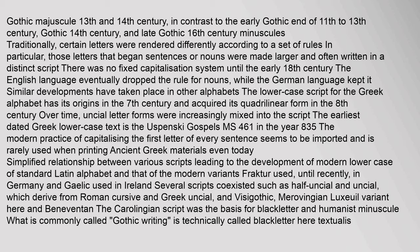There was no fixed capitalization system until the early 18th century. The English language eventually dropped the rule for nouns while the German language kept it. The lower case script for the Greek alphabet has its origins in the 7th century and acquired its quadrilinear form in the 8th century. The earliest dated Greek lower case text is the Uspensky Gospels (MS 461) in the year 835. Several scripts coexisted such as half-uncial and uncial, which derive from Roman cursive and Greek uncial, and Visigothic, Merovingian, and Beneventan variants.